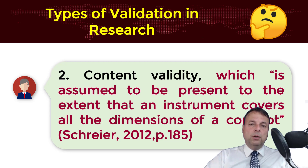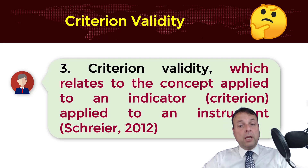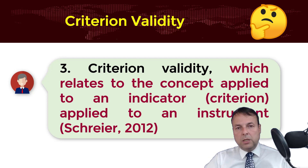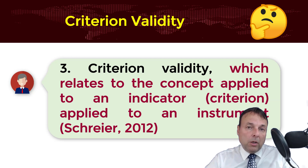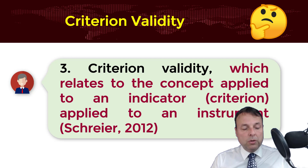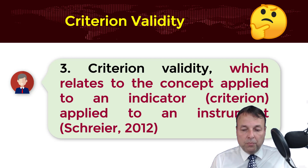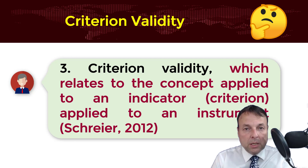Criterion validity relates to the concept applied to an indicator — a criterion applied to an instrument. For instance, if you are studying a negotiation process and conducting interviews, you could interview respondents with more than 15 years of business negotiation experience.